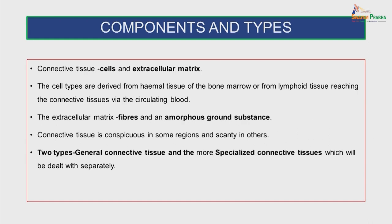The components of the connective tissue include the cells and the extracellular matrix. The cells are derived from haemal tissue of the bone marrow or from lymphoid tissue, reaching the connective tissues via the circulating blood. The extracellular matrix consists of fibers and an amorphous ground substance. The connective tissue is conspicuous in some regions and scanty in others. Basically we have two types: the general connective tissue, which will be discussed today, and the more specialized connective tissues dealt with separately.